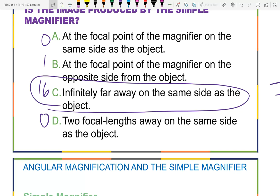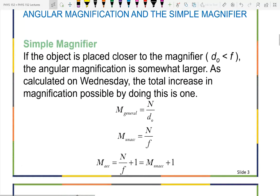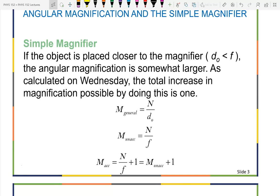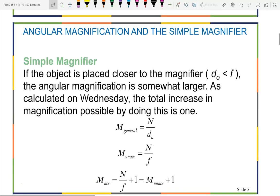One was very much a conceptual understanding of what a lens is doing; the other was the mathematics that comes from the geometry. As a review of the simple magnifier: the magnification equals the near point divided by the object distance, which for unaccommodated vision...